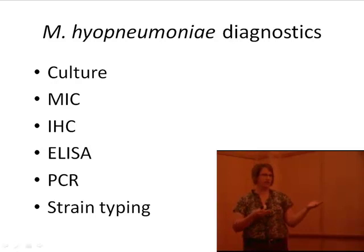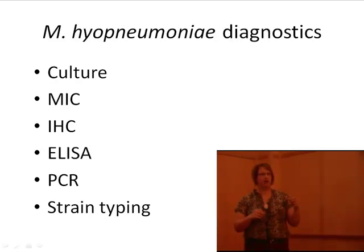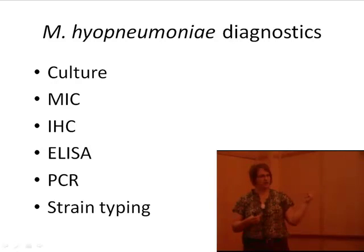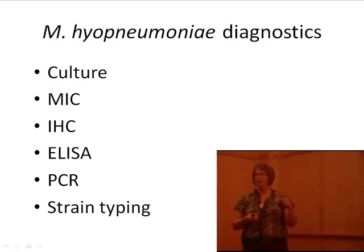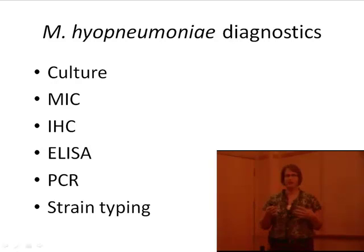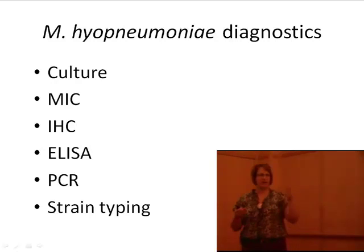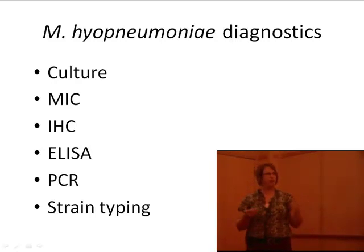The IDEXX ELISA is a membrane preparation — a detergent (Tween 20) is used to extract proteins in a large mixture that's put on the plate. You might think that makes it prone to false positives via cross-reactions with related species. We've never been able to replicate that experimentally; there was a hint that M. flocculare could do that but we've never shown it again. If other mycoplasmas were a huge cross-reaction problem, we could never use the IDEXX ELISA because way more pigs have M. hyorhinis, M. hyosynoviae, and M. flocculare than M. hyopneumoniae.